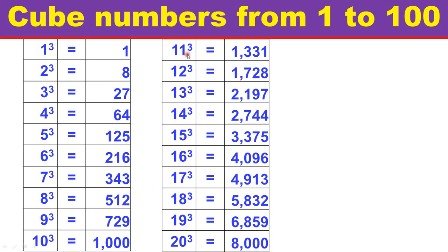11 cube equals 1331. 12 cube equals 1728. 13 cube equals 2197. 14 cube equals 2744. 15 cube equals 3375.